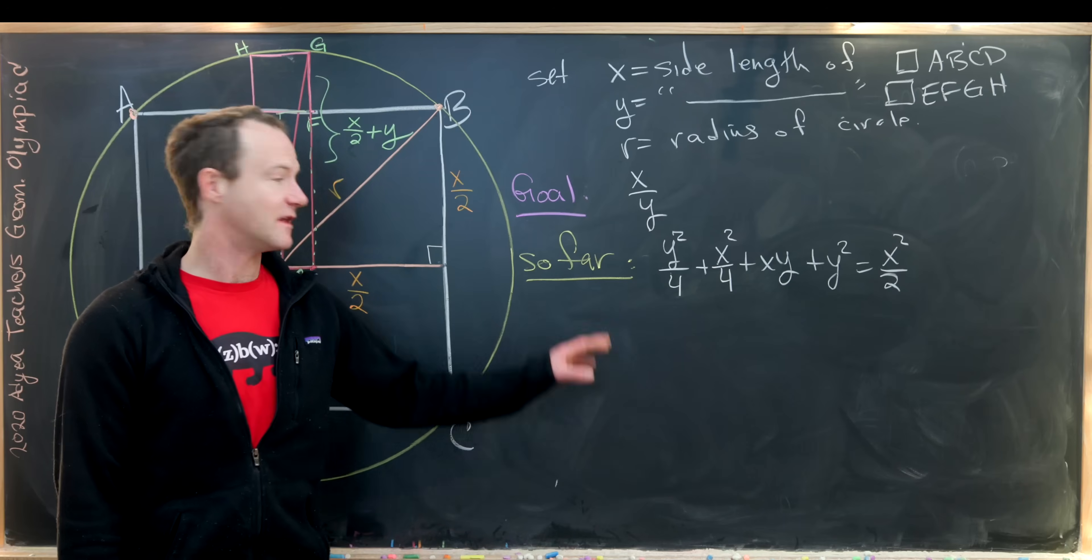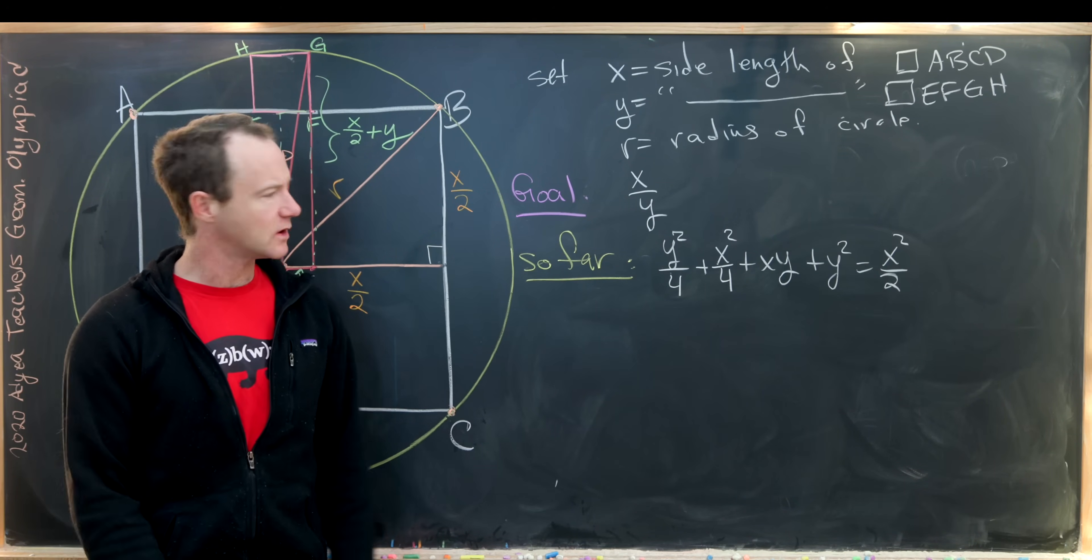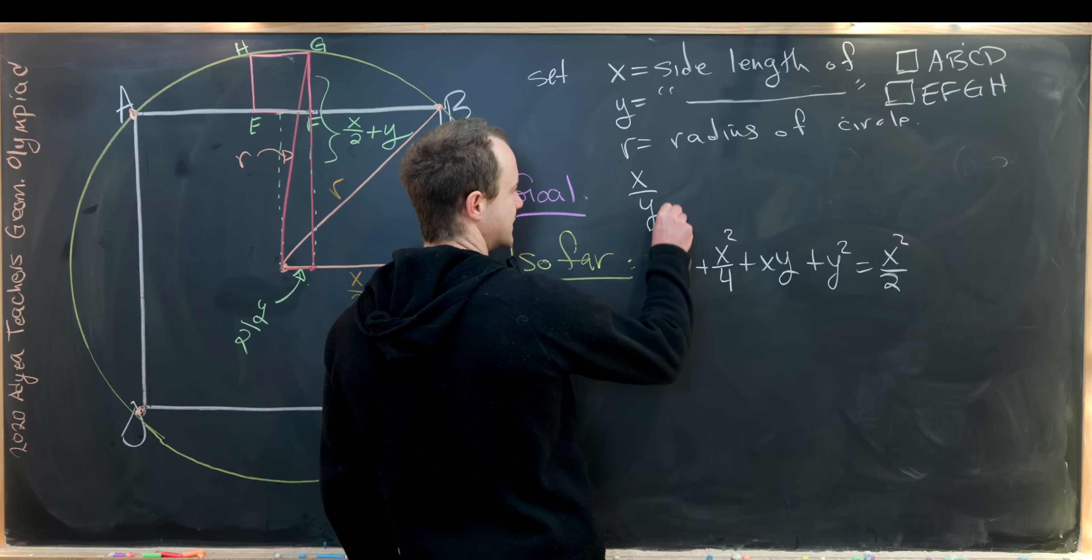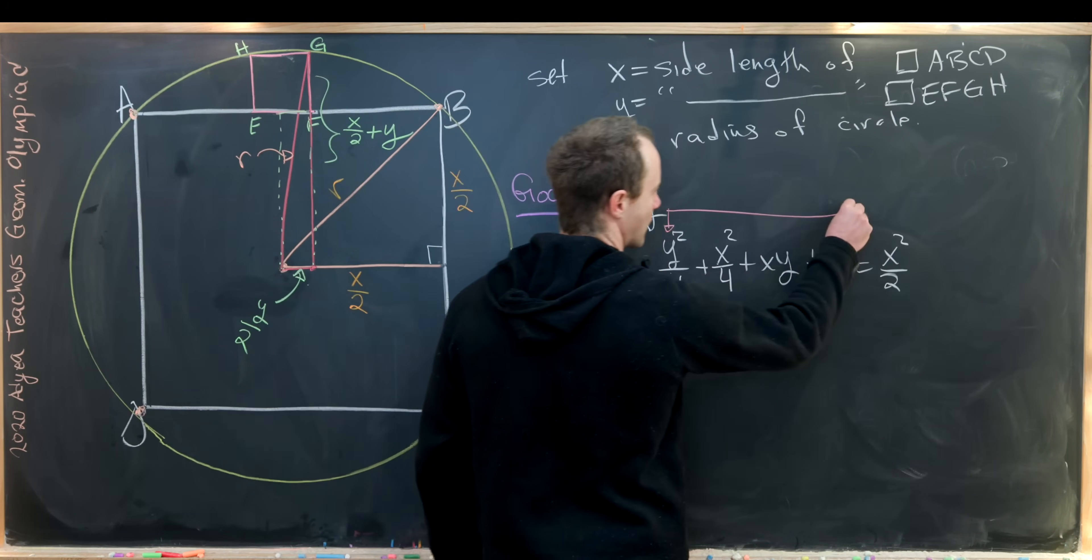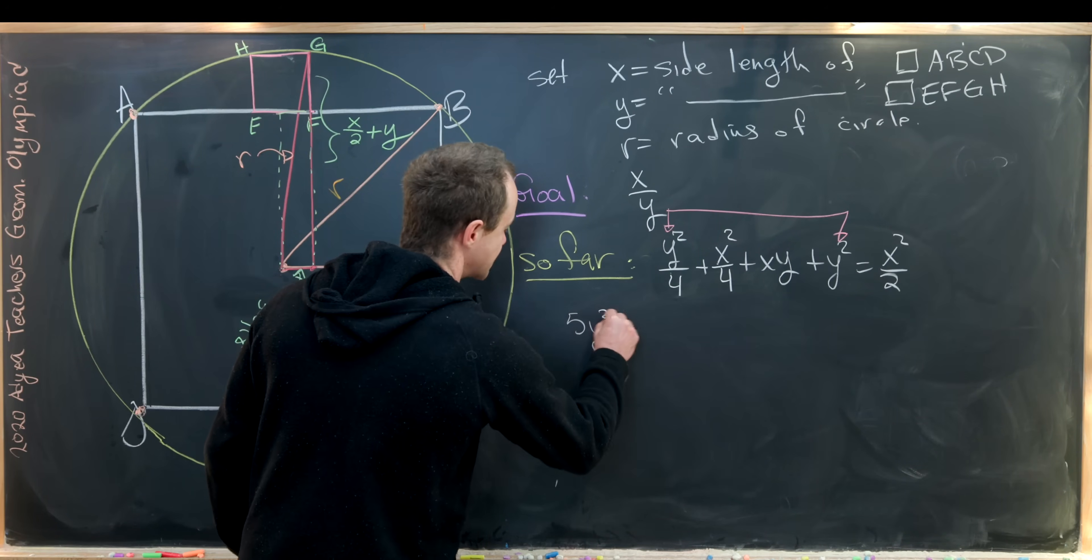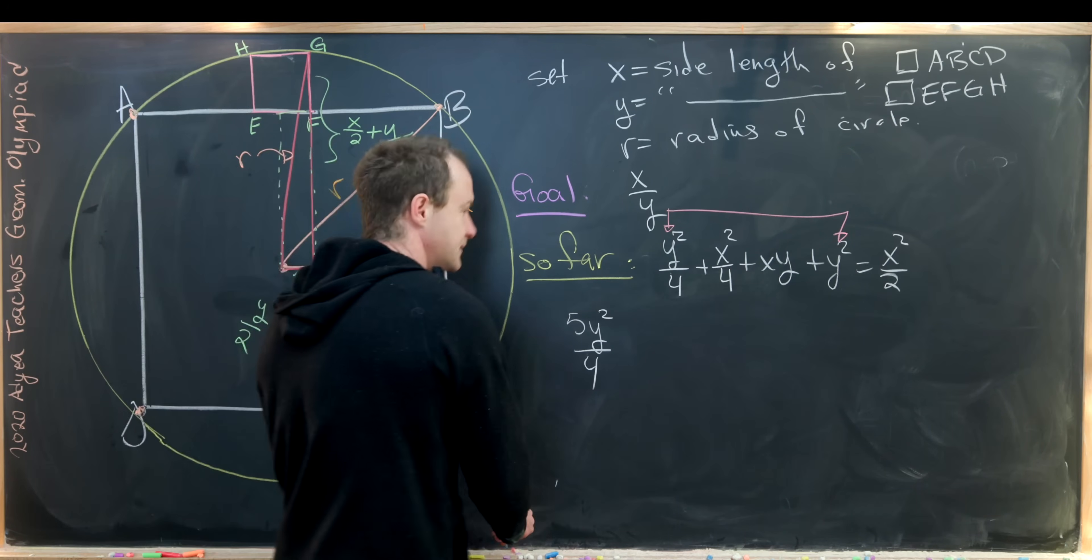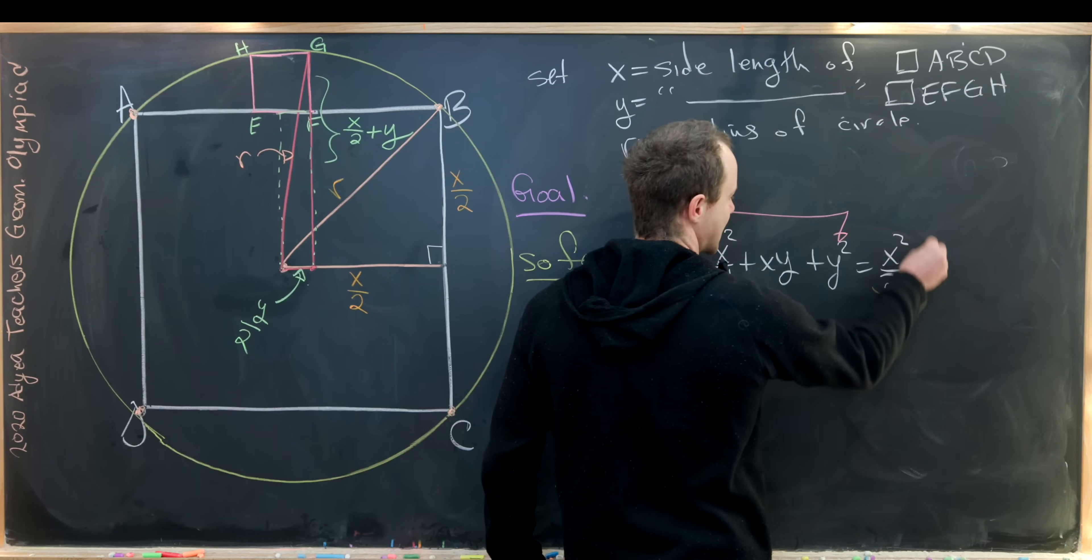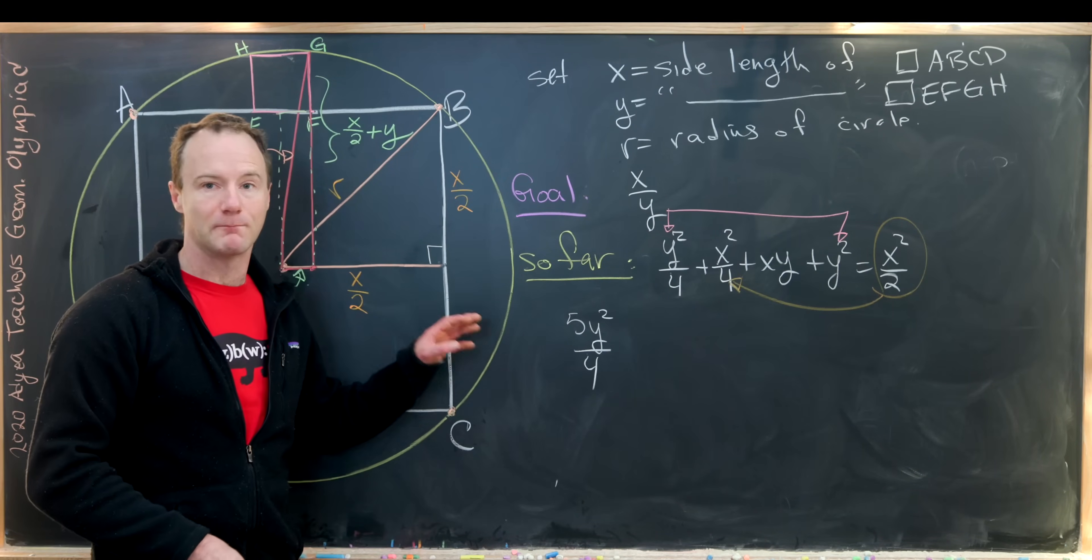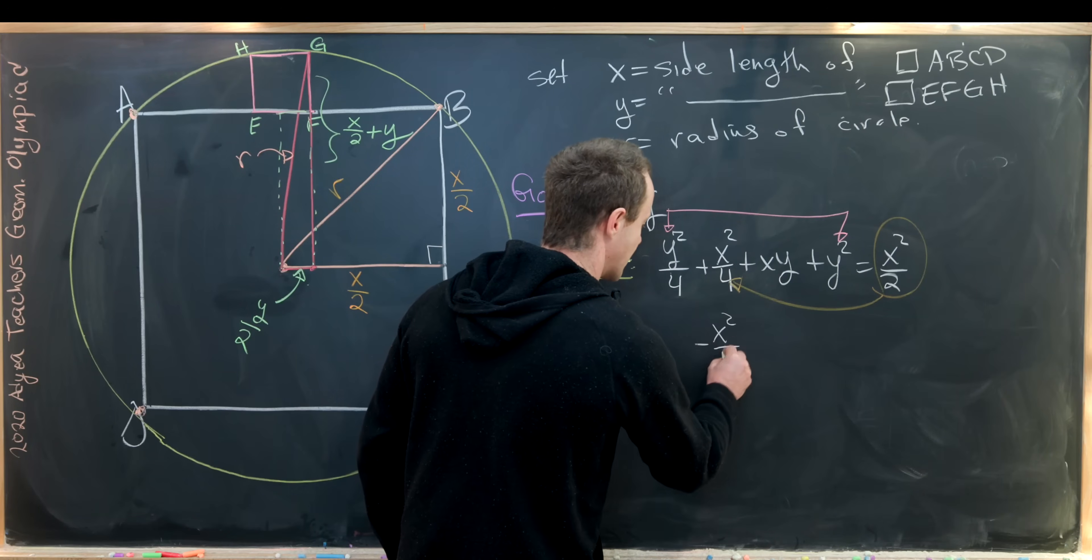So far, we've determined that X and Y satisfy the following quadratic equation. Now we'll move some things around so this is easier to work with. So let's first notice that we can take this Y squared over 4, add it to this Y squared, and that will give us 5Y squared over 4. So that's a good simplification. Furthermore, we can take this X over 2 and move it over, and we'll have X squared over 4 minus X over 2. That will give us minus X squared over 4.